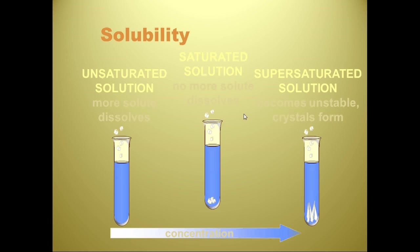Solubility: we have three types of solutions. Unsaturated solutions, saturated solutions, and supersaturated solutions — the amount of concentration, or solute dissolved, increases as you go to the right. Unsaturated solutions have the ability to dissolve more solute. Making Kool-Aid by the directions, it's not extremely sweet — you can add more sugar, stir it up, and it all dissolves. That's an unsaturated solution: if you add more solute and stir, it will all dissolve.